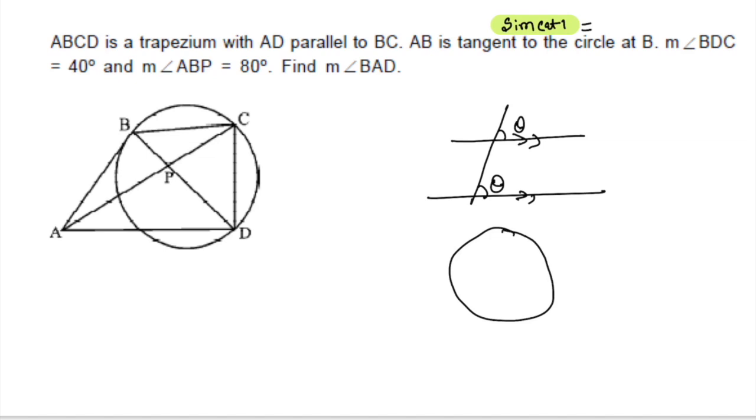Then we are going to use tangent-secant theorem. If we have a circle and a tangent and a secant, alternate segment theorem, if this angle is theta, then this angle will be theta. I am going to use just two concepts.